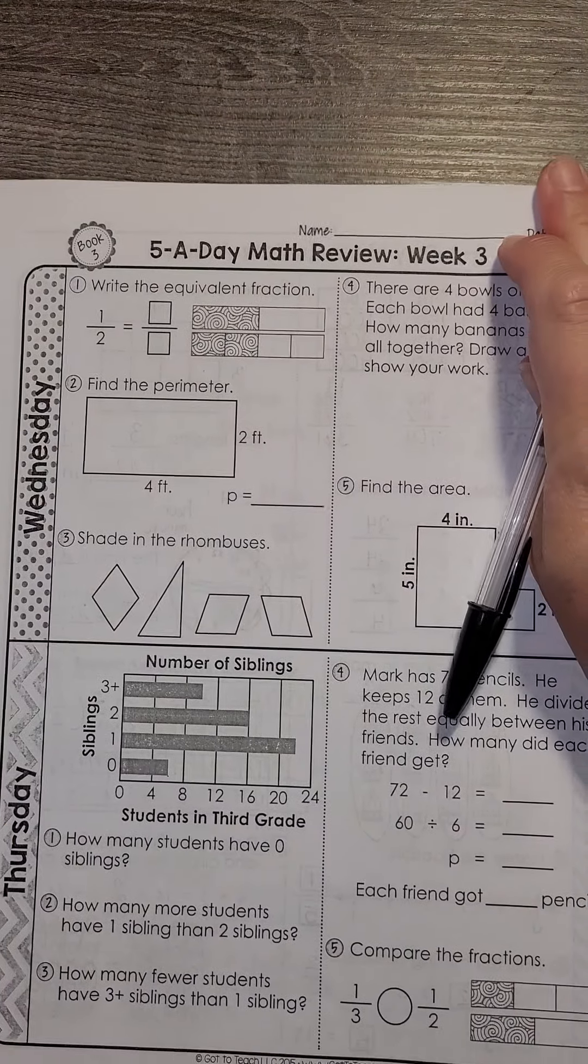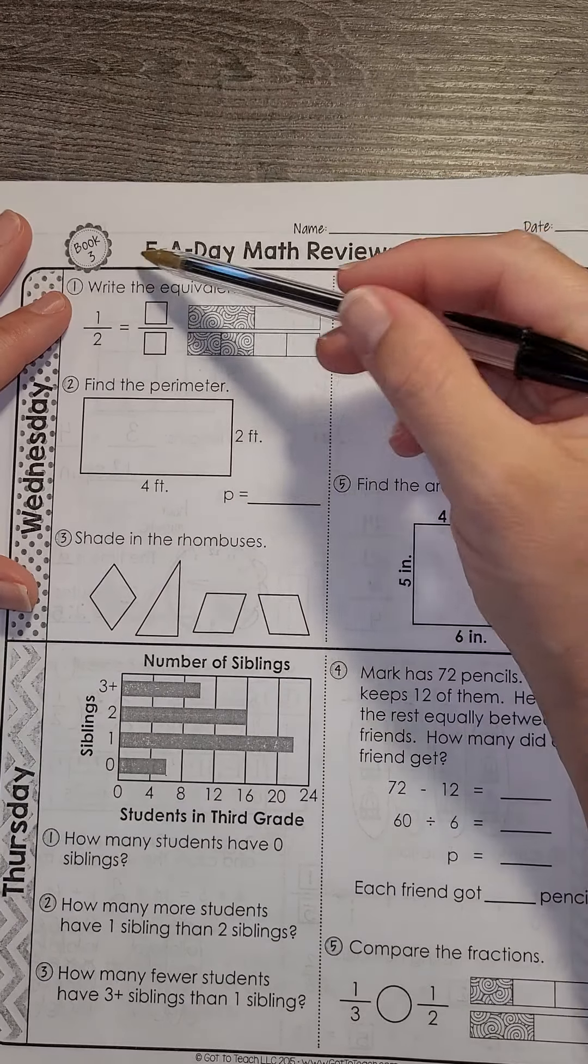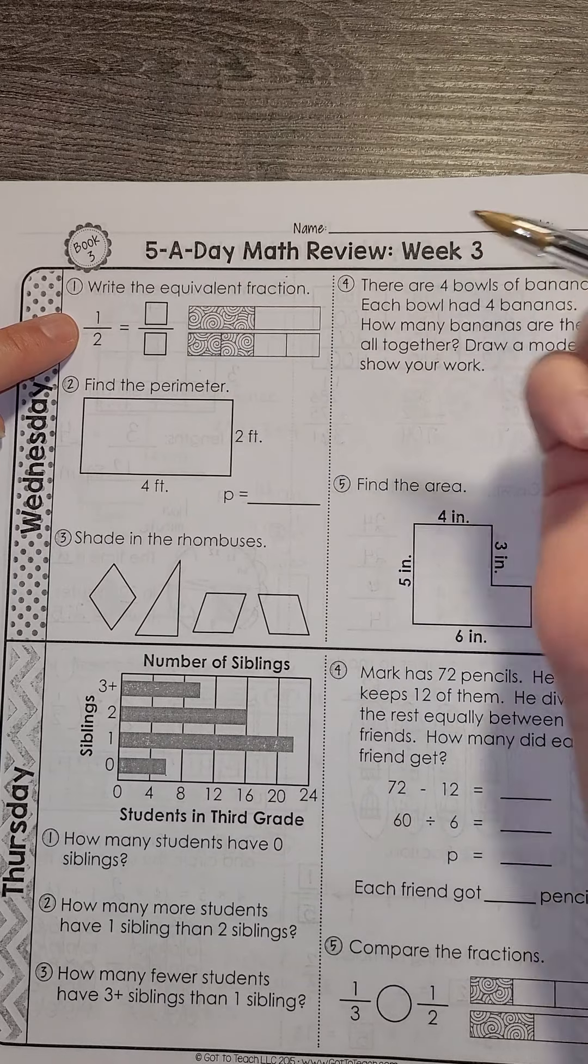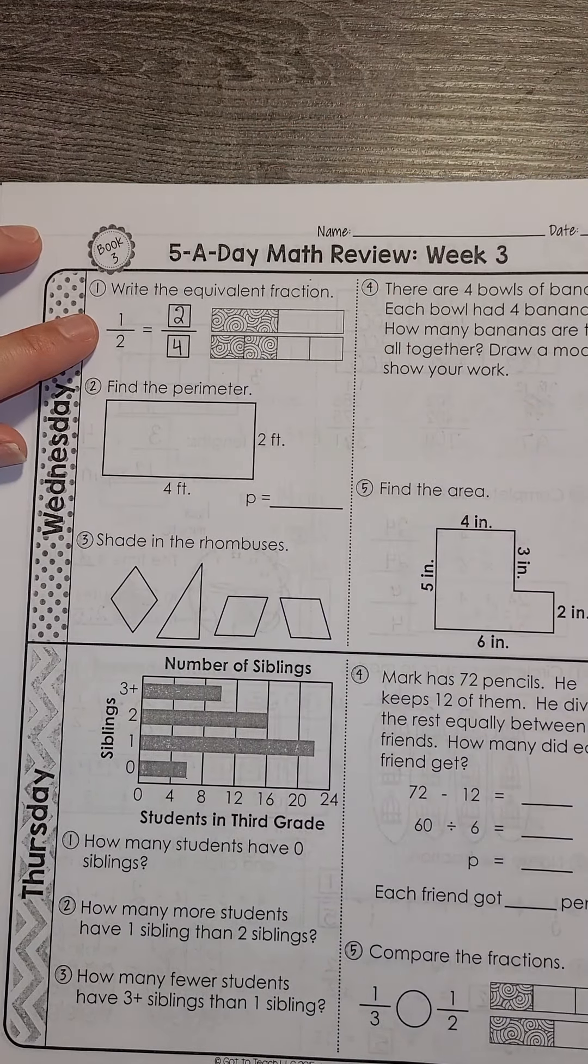Let's go ahead and move on and check our Wednesday and Thursday from week 3. So we have, write the equivalent fraction. 1 half and that is equivalent to 2 fourths.